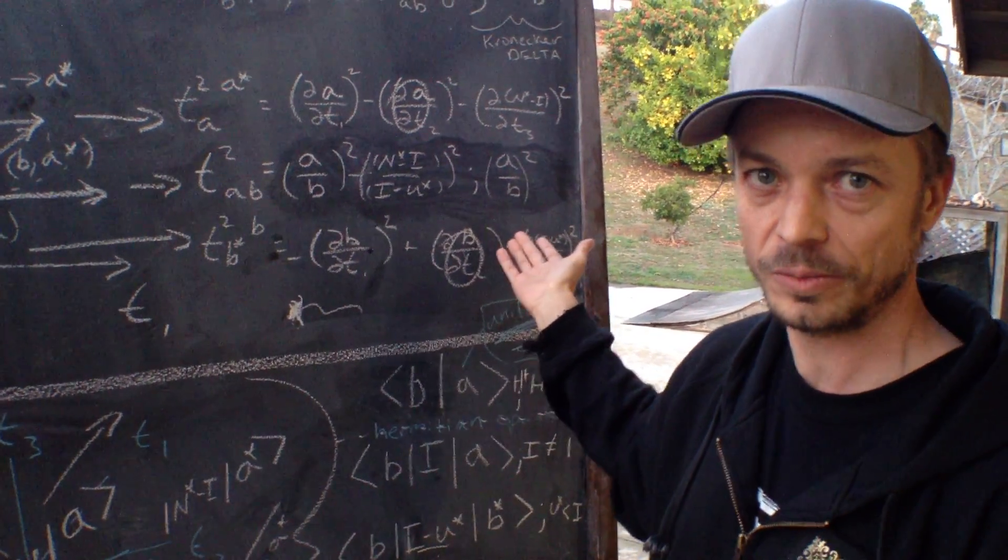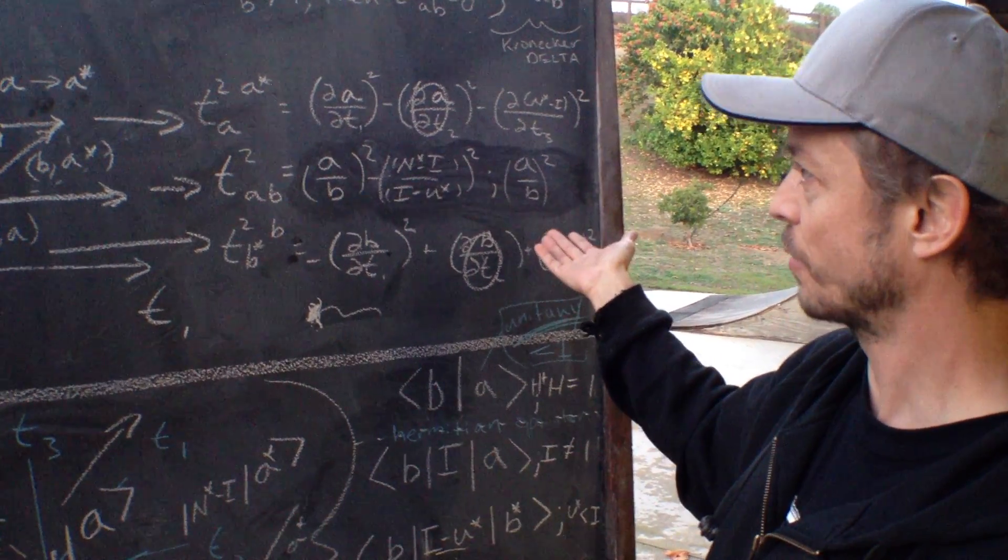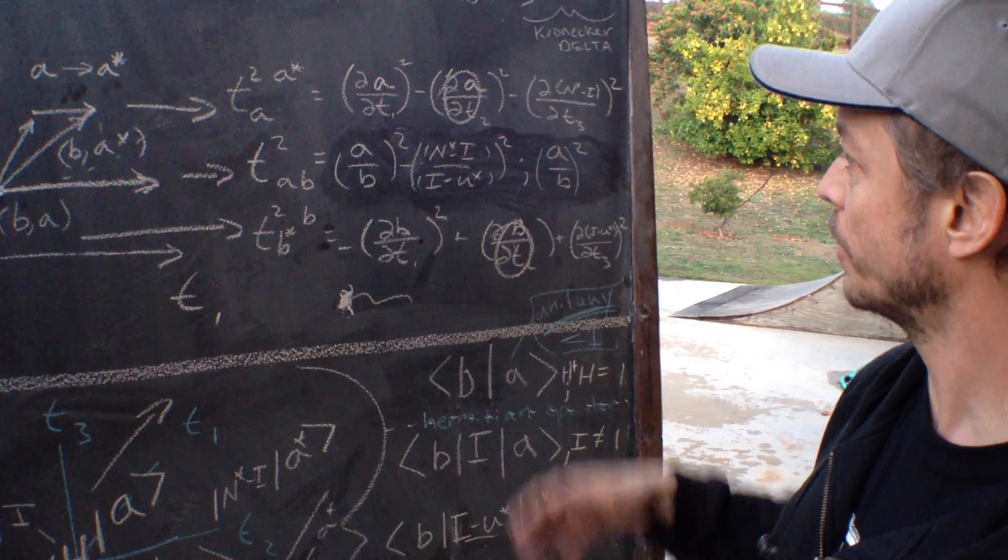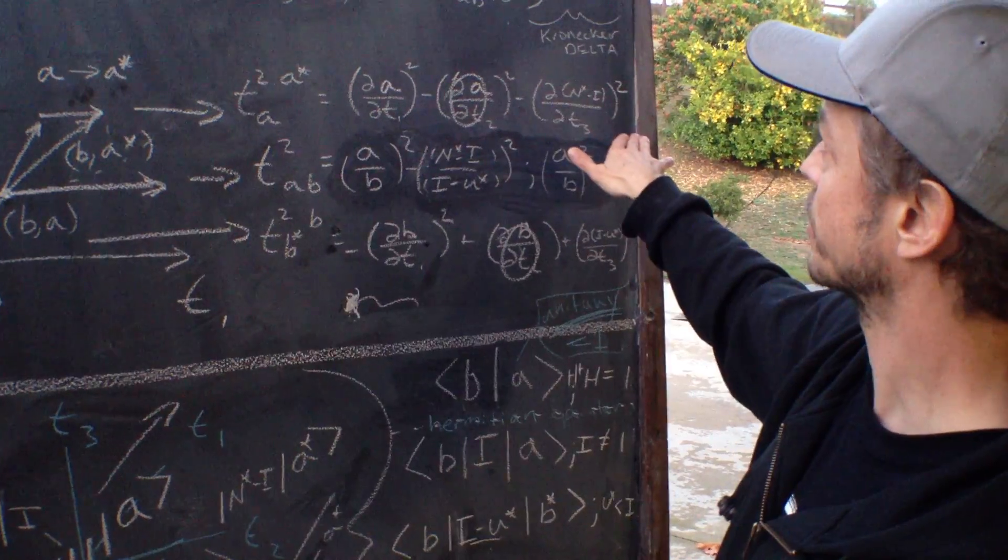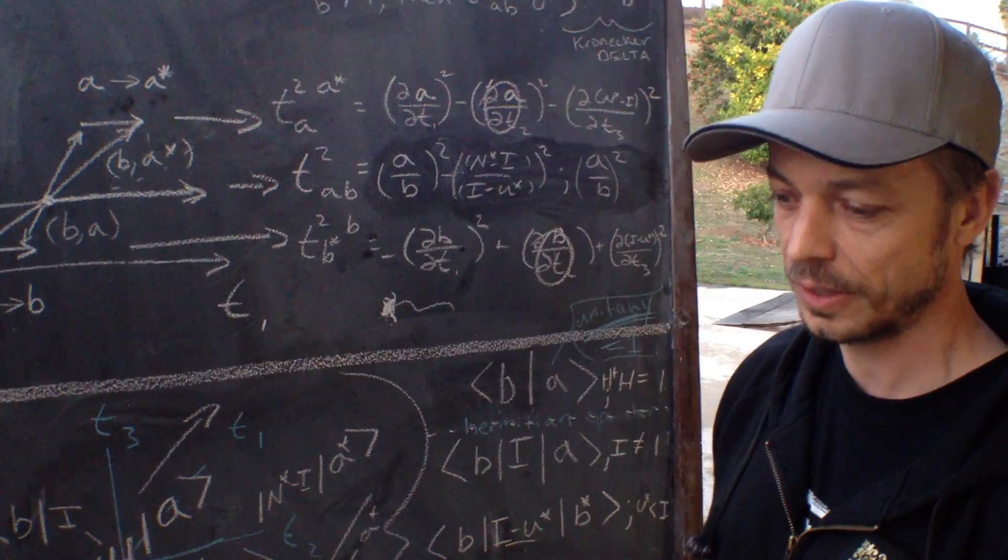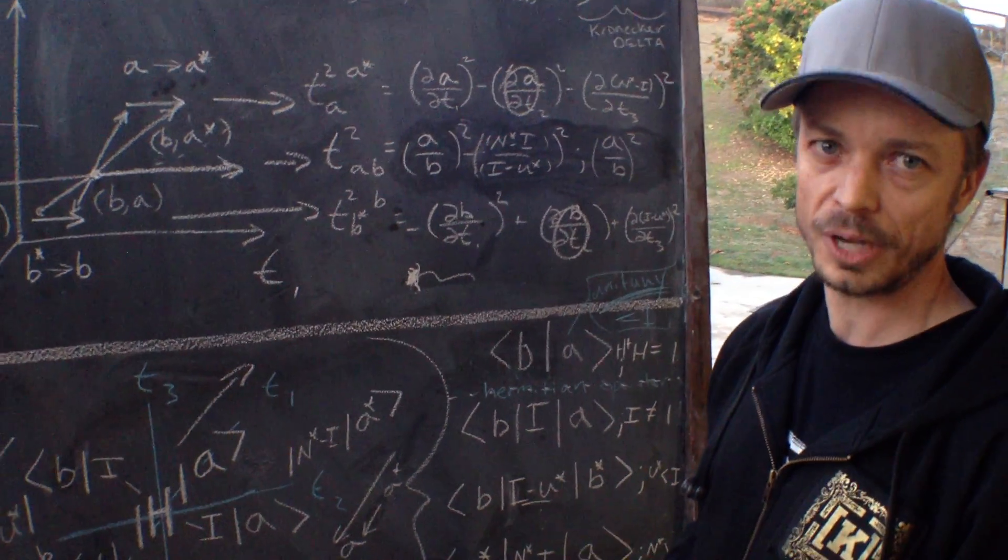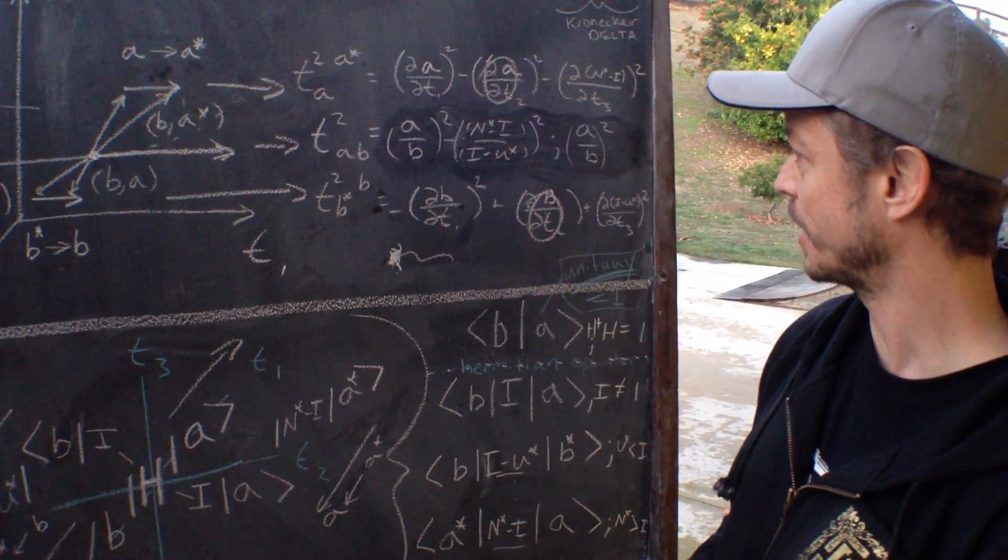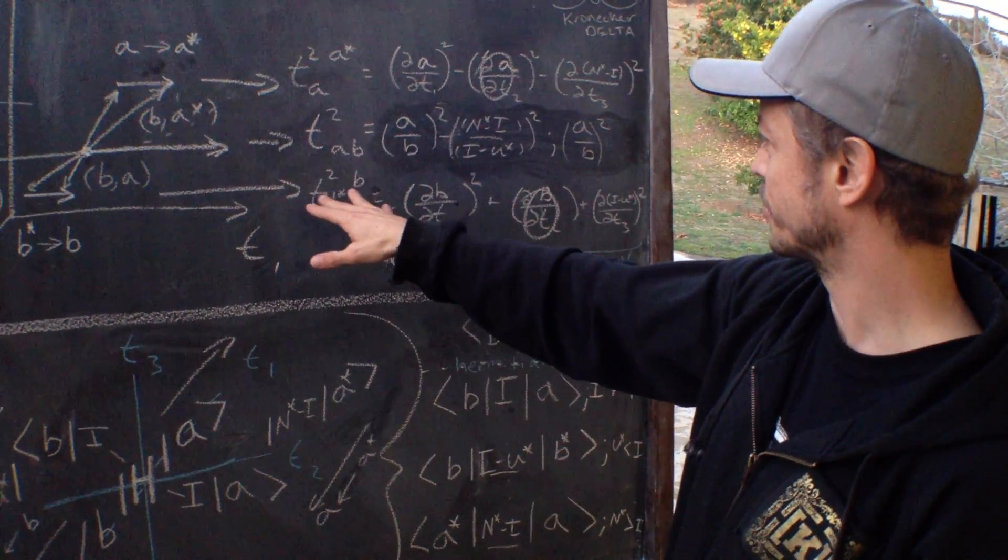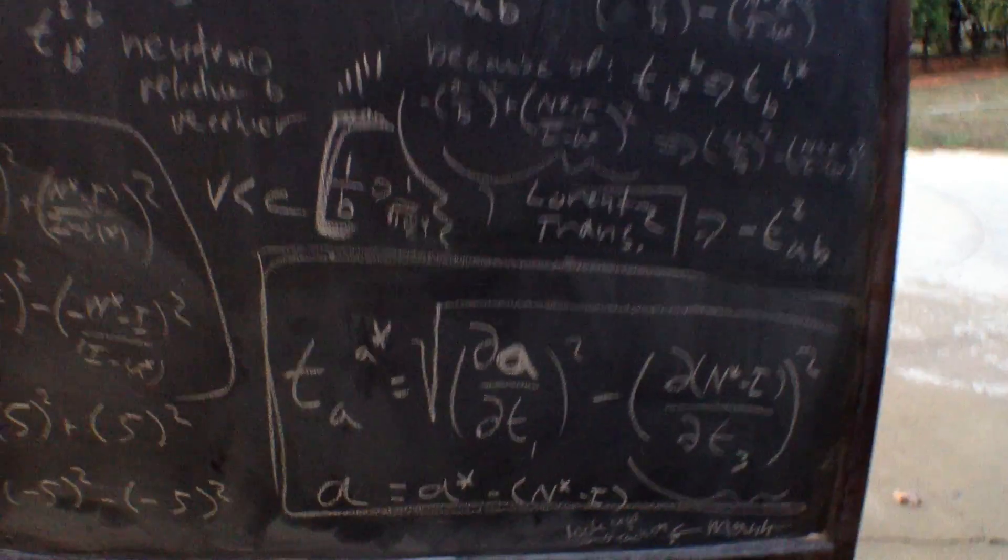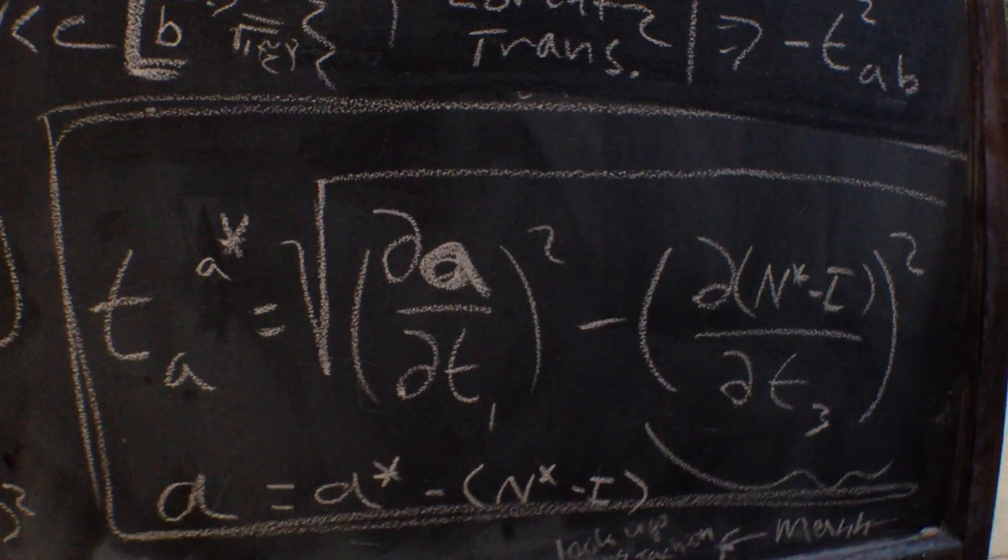However, when the Lorentz transformation doesn't provide adequate mathematics for us, such as with the apparent superluminal neutrino, that's when we'll use this tensor. Or in the case of something like dark matter or possibly the anomalous orbit of Mercury, we would use this tensor. But that's for a whole other subject. I just wanted to quickly get out there, here's the equation for the superluminal neutrino. Thank you.